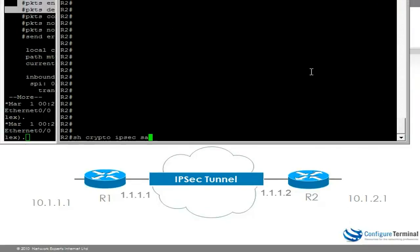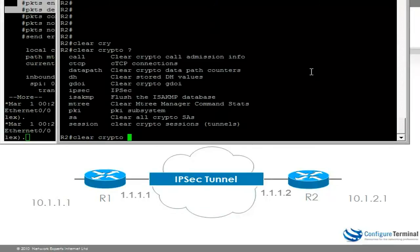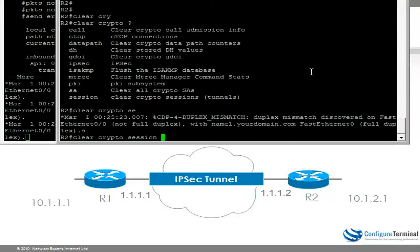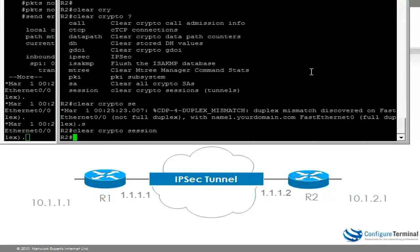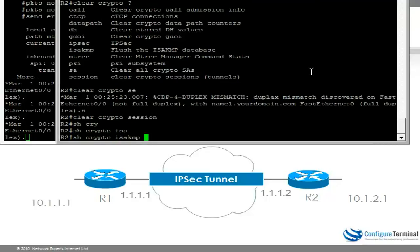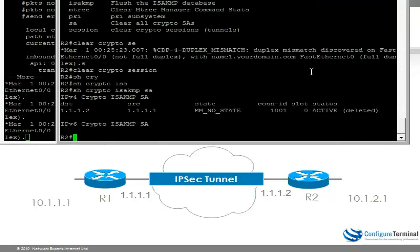On router 2, let's clear the crypto session to pull down all the tunnels. Now if I do the command show Crypto ISAKMP SA, you can see it's deleted.